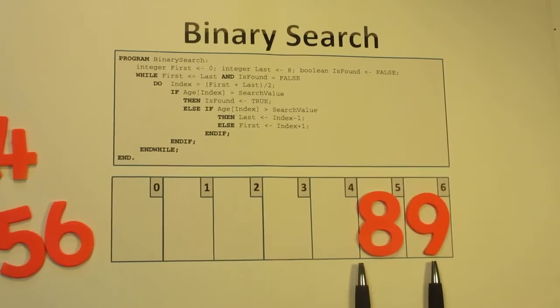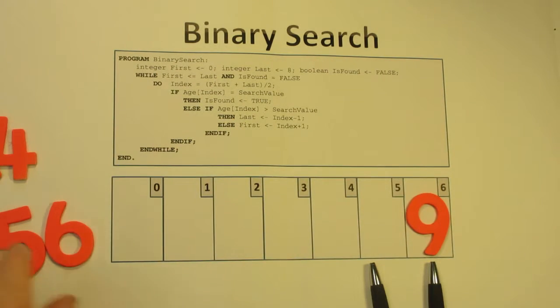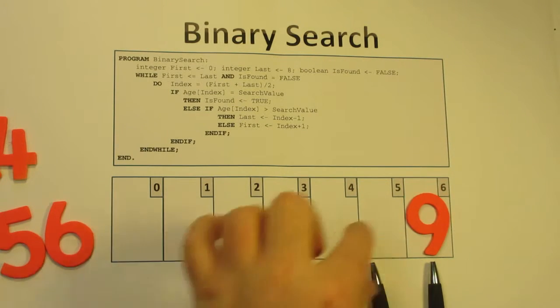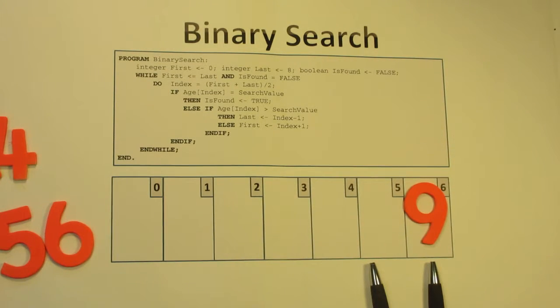Now we look at what's left of the array and we say is the number nine either at the start, the end, or the middle of this? Well it's at the end, so we found the number nine quite quickly. In three moves we've found the number we're looking for.